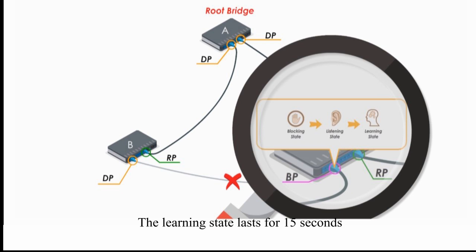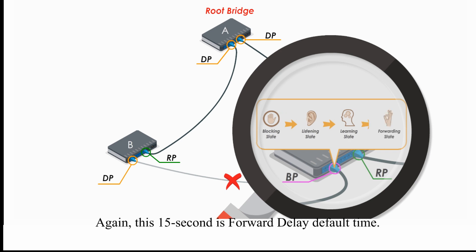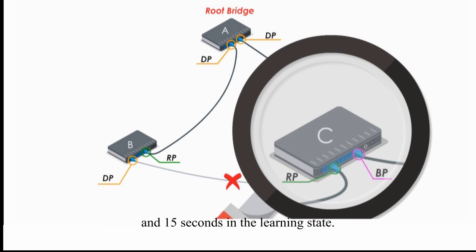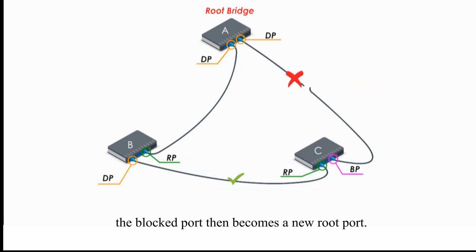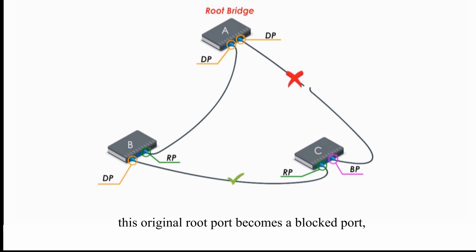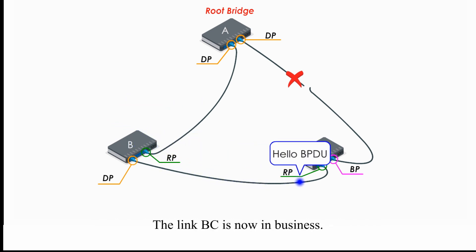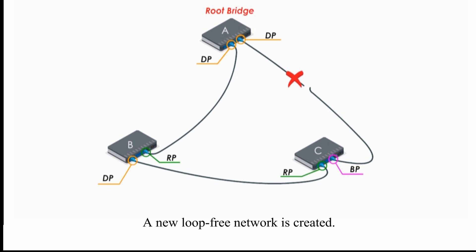The learning state lasts for 15 seconds before changing to the forwarding state — again, 15 seconds is the forward delay default time. This self-healing process takes about 50 seconds: 20 seconds waiting time, 15 seconds in the listening state, and 15 seconds in the learning state. After 50 seconds, the blocked port becomes a new root port on switch C. At the same time, the original root port becomes a blocked port and the link AC is blocked. Switch C reconnects to the root bridge through switch B. The link BC is now in business, and a new loop-free network is created. STP gets the network up and running again.